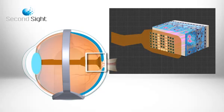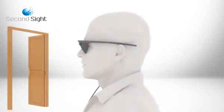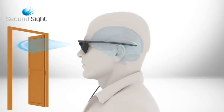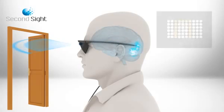These pulses stimulate the retina's remaining cells and are transmitted down the optic nerve, conveying visual information to the brain which perceives patterns of light.